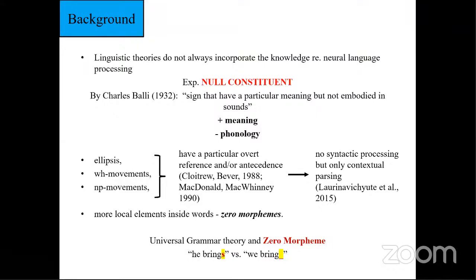Here are several types of such constituents, for example ellipses, WH movements, NP movements and more local elements like zero morphemes. The first three are more complex and have a particular overt reference and antecedents. As shown on the example of WH movements, there is no syntactic processing under them but only parsing. On the other hand, we have more local elements, zero morphemes, that could have some morphosyntactical processing under them.